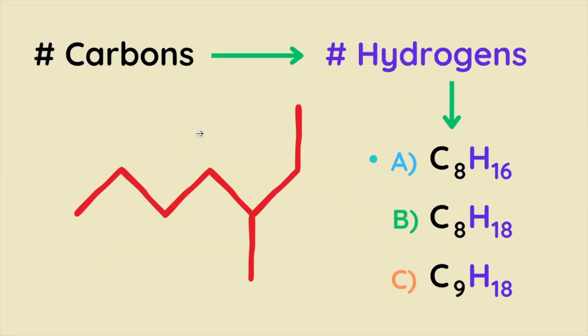Now we have to dissect this bond line structure in this order. We find the number of carbons and then we find the number of hydrogens and together we figure out what the molecular formula is.